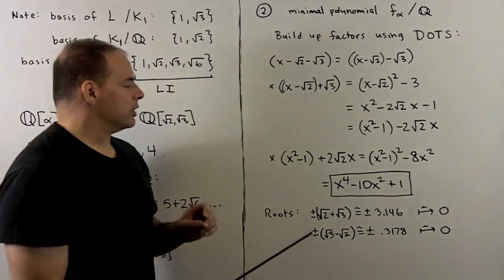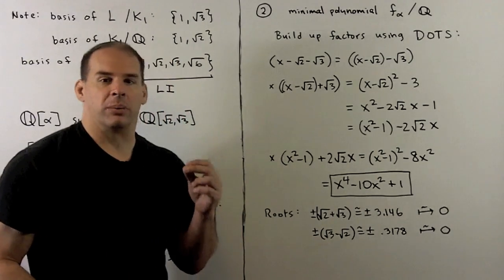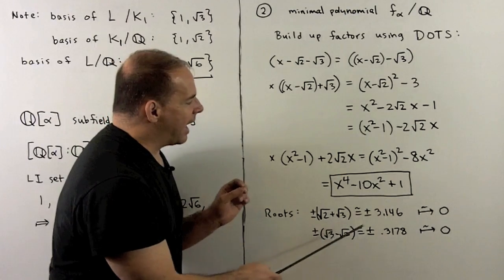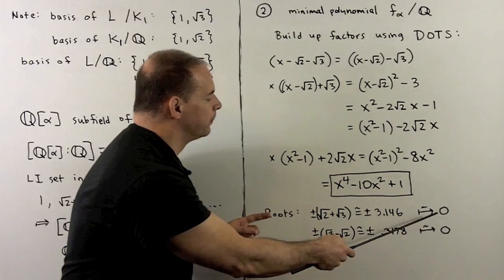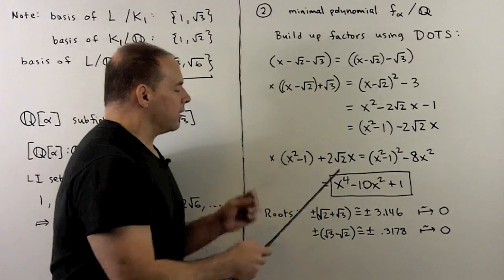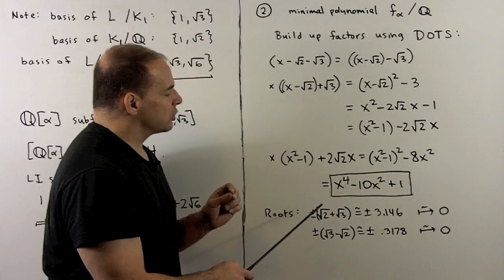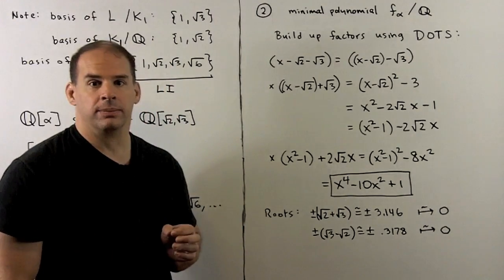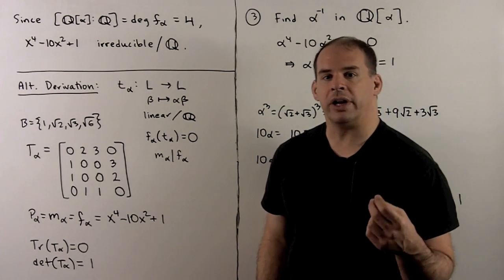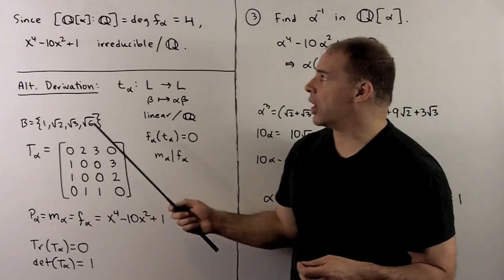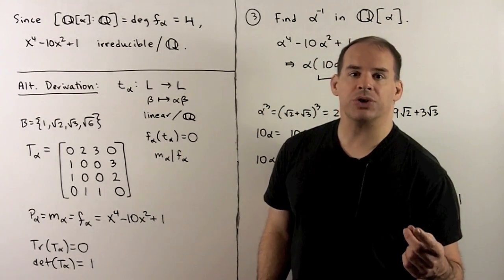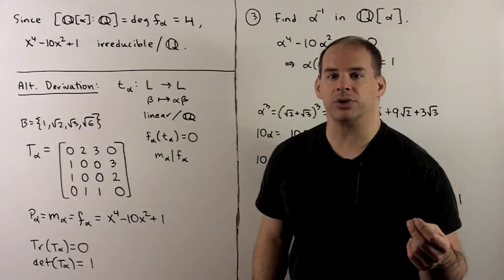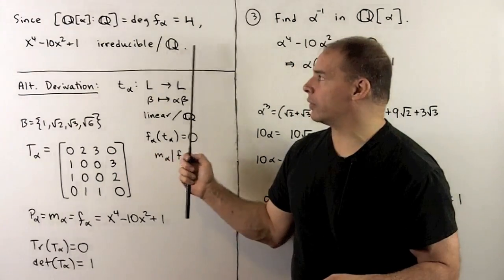Now we check our work — we want to make sure that √2 + √3 is a root. Approximated by 3.146, a zero comes out. By this construction, the other roots of this polynomial are ±√2 ± √3, i.e., √2 and √3 with all possible sign combinations. Note that the degree of ℚ(α) over ℚ is 4, which is also the degree of the minimal polynomial. That forces our minimal polynomial to be x⁴ − 10x² + 1. Because minimal polynomials are always irreducible, this polynomial is irreducible over the rationals.